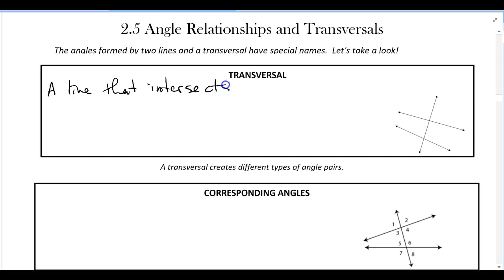that intersects two or more other lines. Let's label each of these lines - let's call this L, this M, and this N. In the example here we can see that line N intersects line L and M, so we could say that N is a transversal because it intersects L and M.